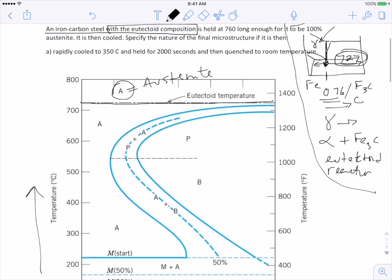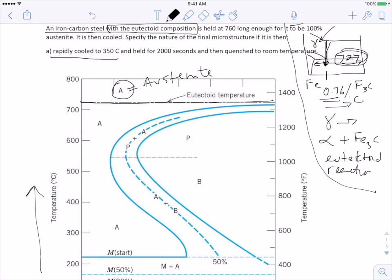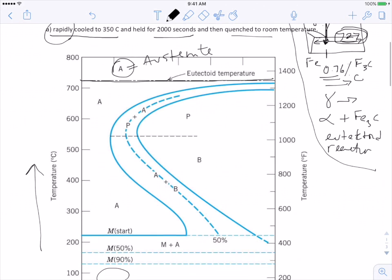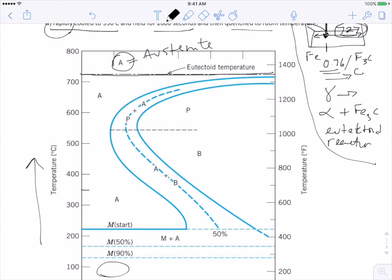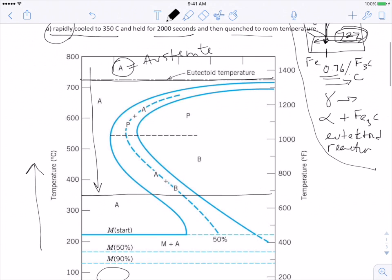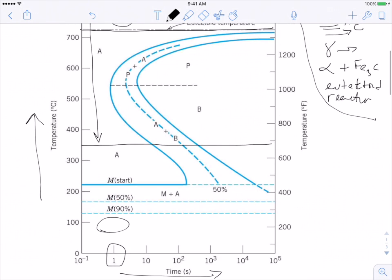So let's just kind of go through, we're cooling it to 350. And so you can use the word rapidly as meaning kind of instantly, and held for 2,000 seconds, and then it's quenched to room temperature. Draw a horizontal line just to orient myself. We've been told it's rapidly cooled, so let's imagine it happens pretty darn fast.